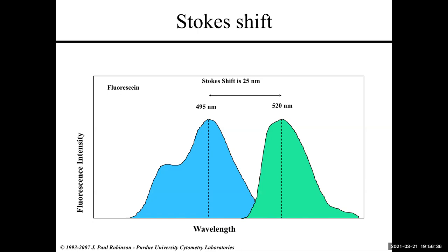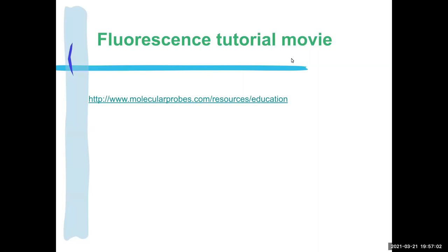This slide is showing you the Stokes shift drawn on the same chart, pointing out that you can see the Stokes shift: 520 minus 495 equals 25 nanometers. There's a great tutorial linked here — let me know if you're having trouble getting the links from the PDF.